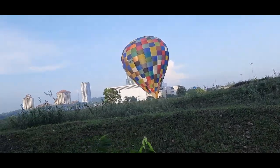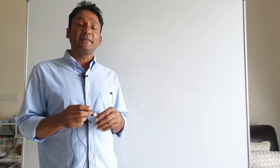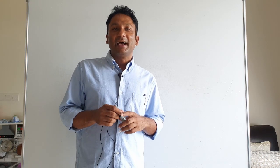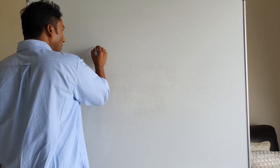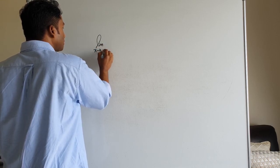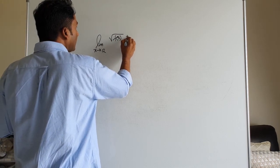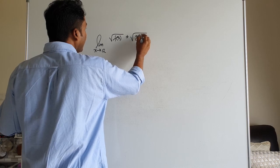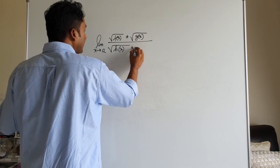So, let's start. Okay, my students, I'm going to talk about this function and I'm going to talk about the limiting value of this function. This function is an algebraic function. The limit is: x tends to a, of root over f of x plus or minus root over g of x, divided by root over h of x plus or minus root over p of x.